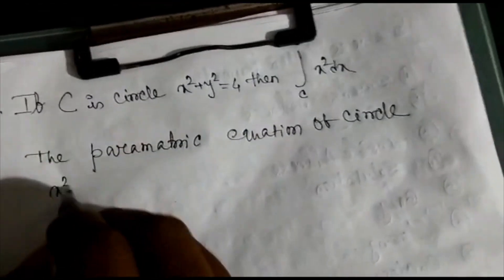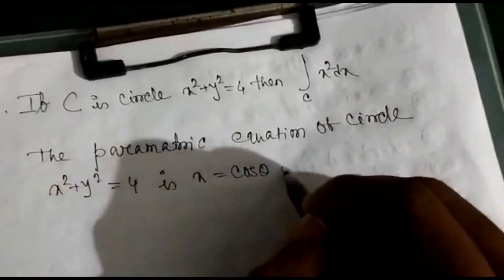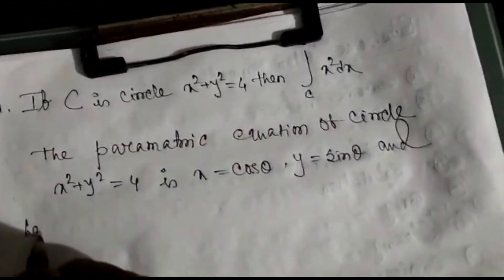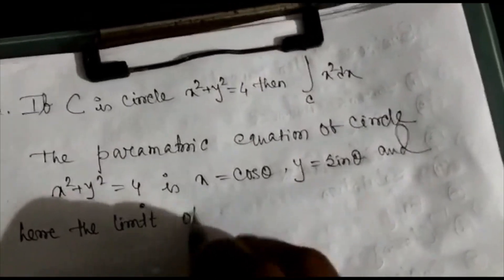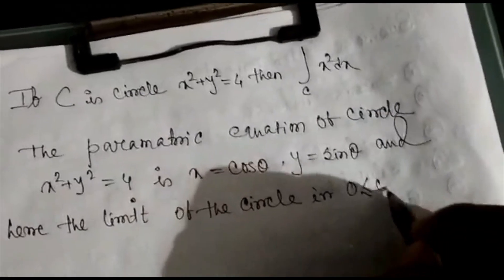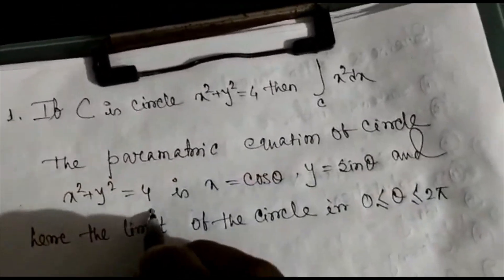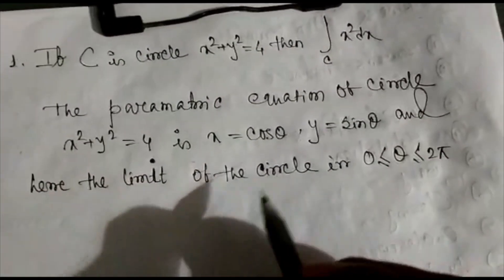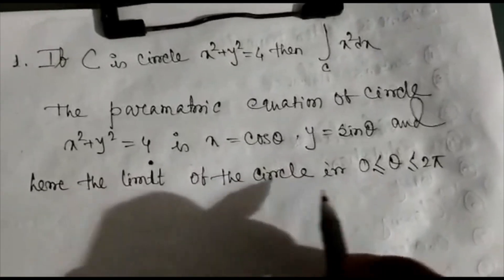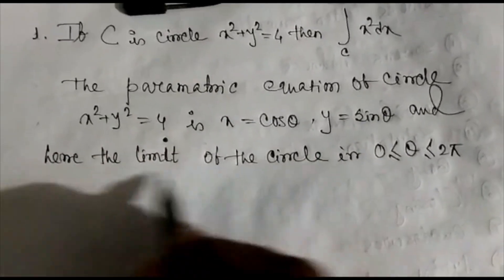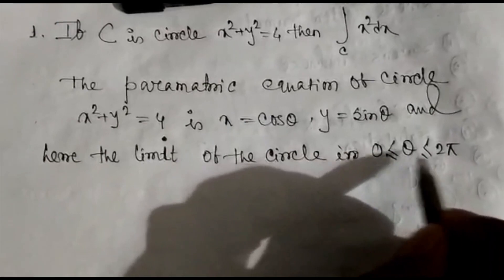The parametric equation of the circle x² + y² = 4 is x = cos θ, y = sin θ. The limit of the circle is 0 ≤ θ ≤ 2π, because the radius of the circle is 2 and its limiting value belongs to 0 to 2π.